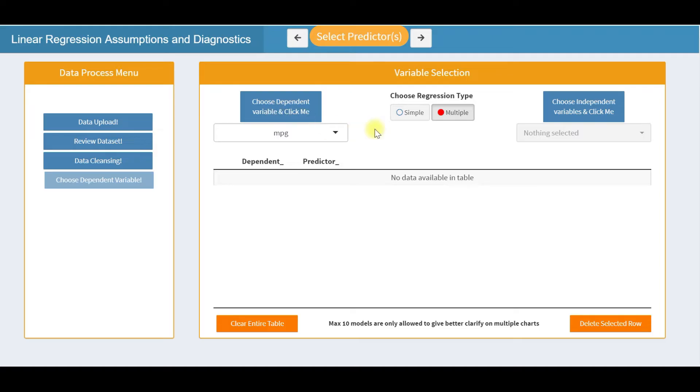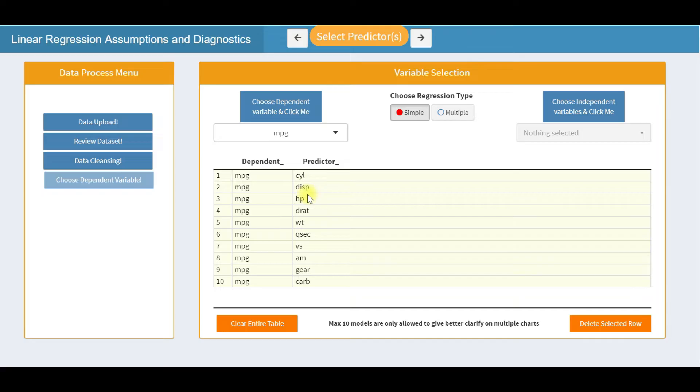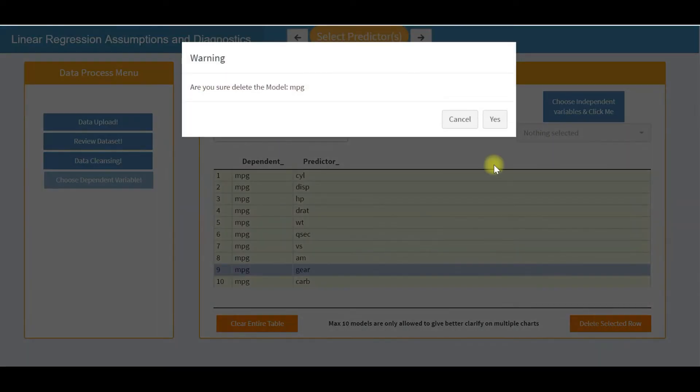Next is the selection of dependent and independent variables and building models for linear regression analysis. Here you will select the dependent variable and click the button above that. In the middle you have the option to choose the type of regression. If you choose simple and add independent variables, you will see simple linear models generated in the table below.